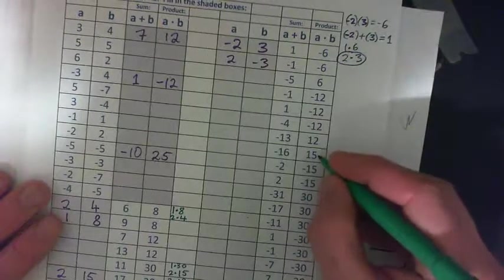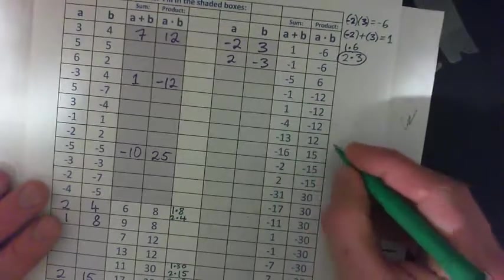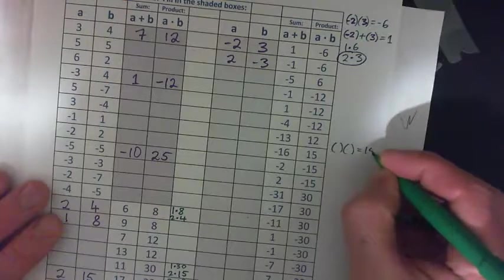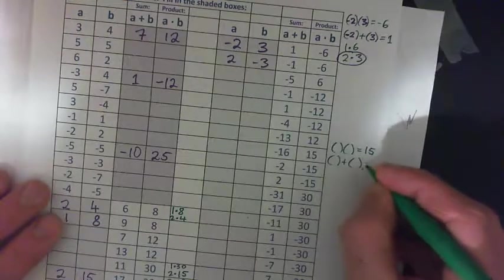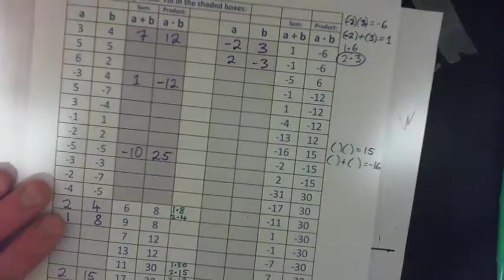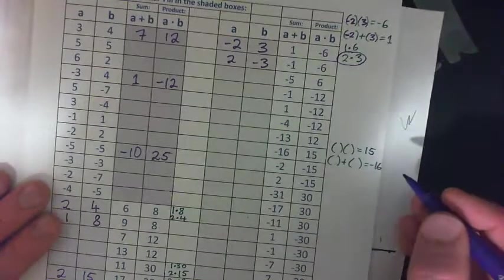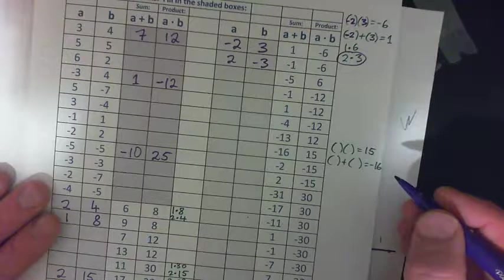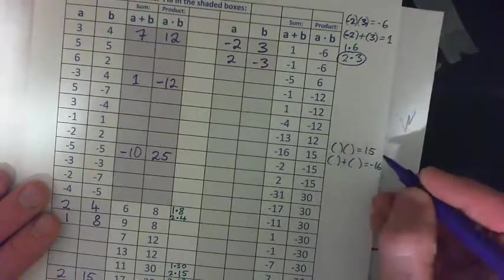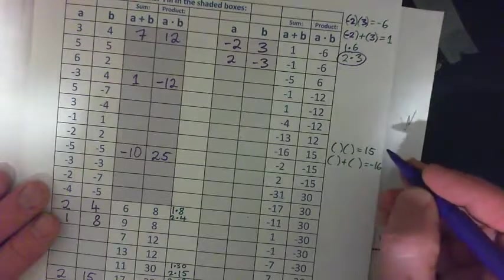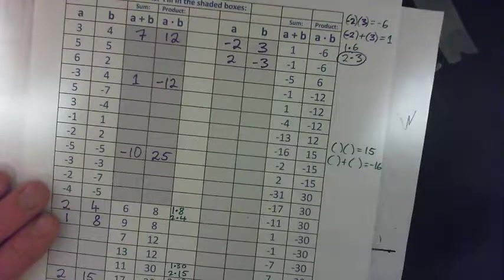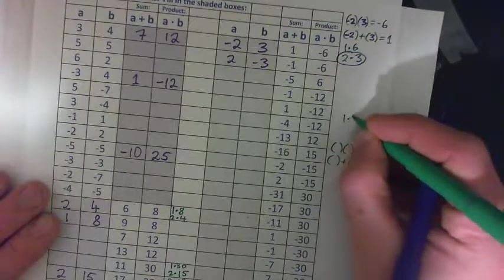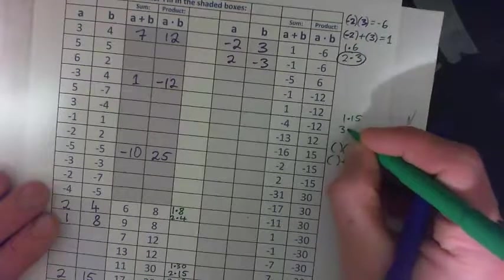I'll just do this one for fun. What two numbers multiply to give 15 and add to give negative 16? List the factors of 15: 1 times 15, 2 doesn't go in, and 3 times 5.